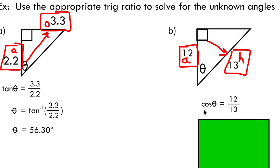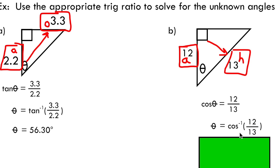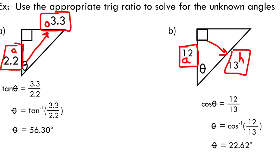Now I apply the cosine inverse operation — not the tan inverse, because we're working with cosine. Taking the cosine inverse of both sides, the cos and cos inverse cancel, leaving just theta on the left. On the right I have the cos inverse of 12 over 13. Inputting that into your calculator results in an angle of 22.62 degrees. We've successfully applied the cosine ratio to solve for this unknown angle.